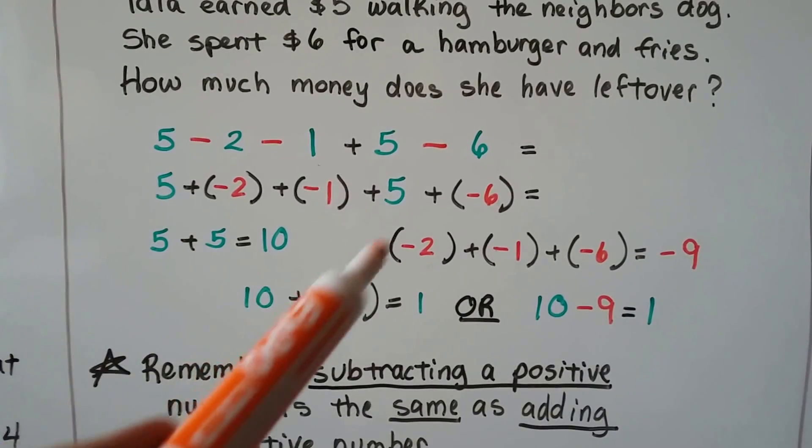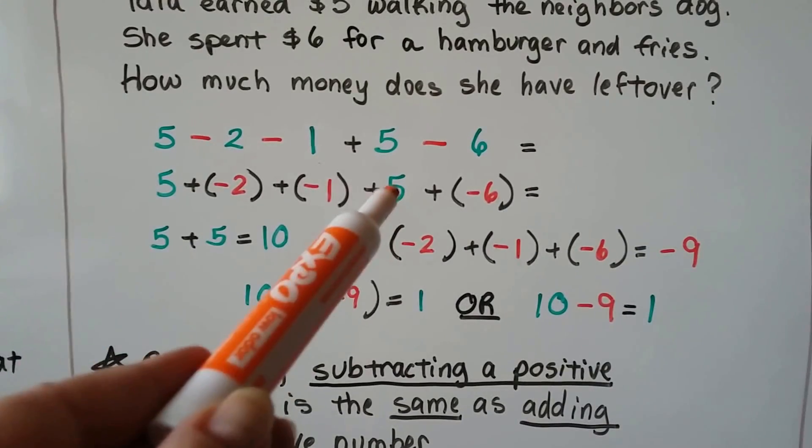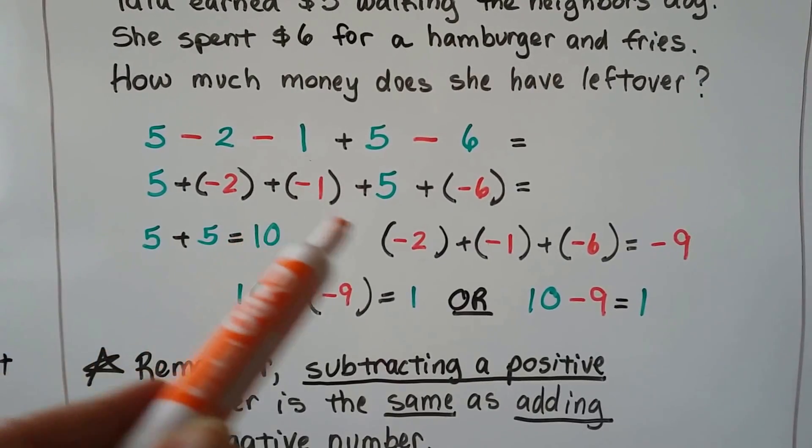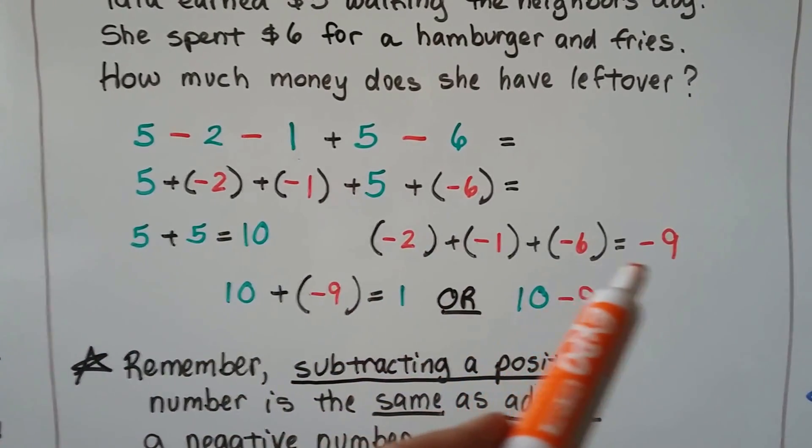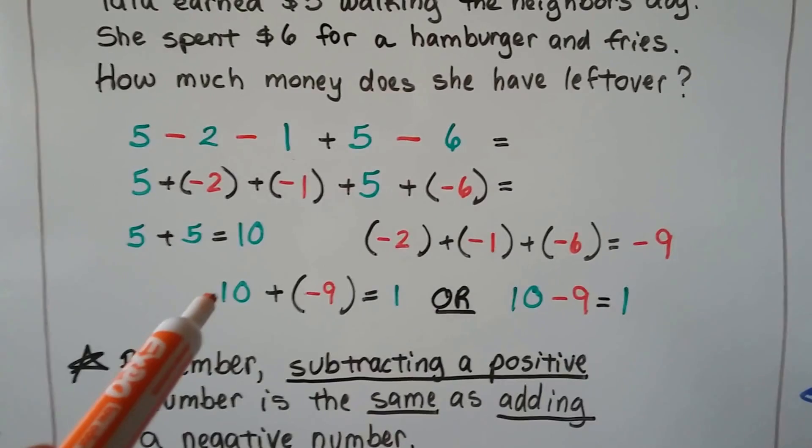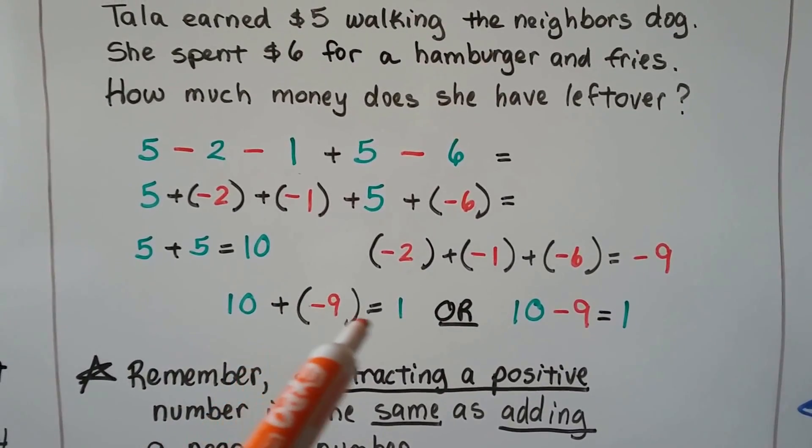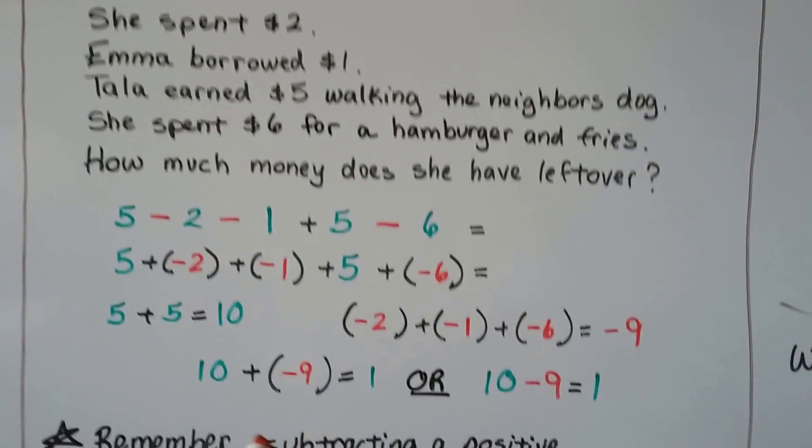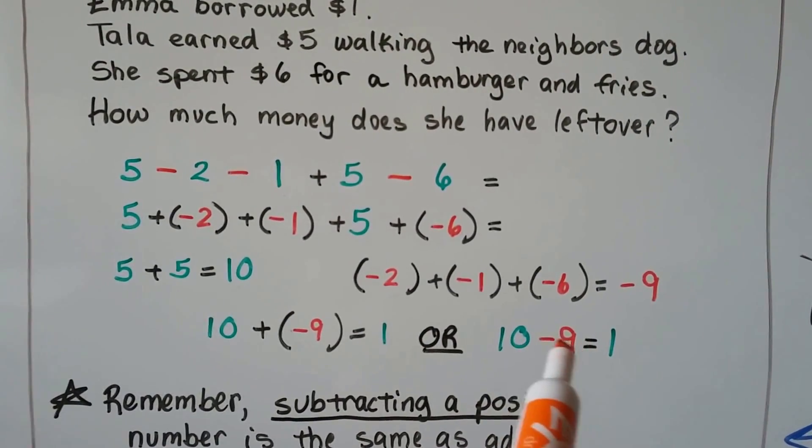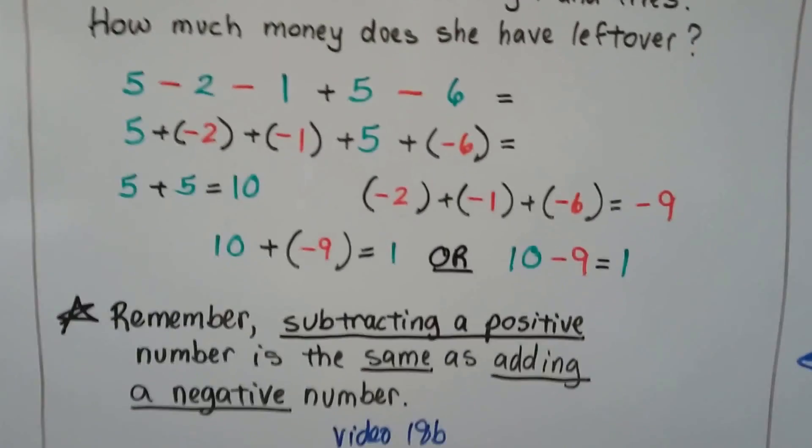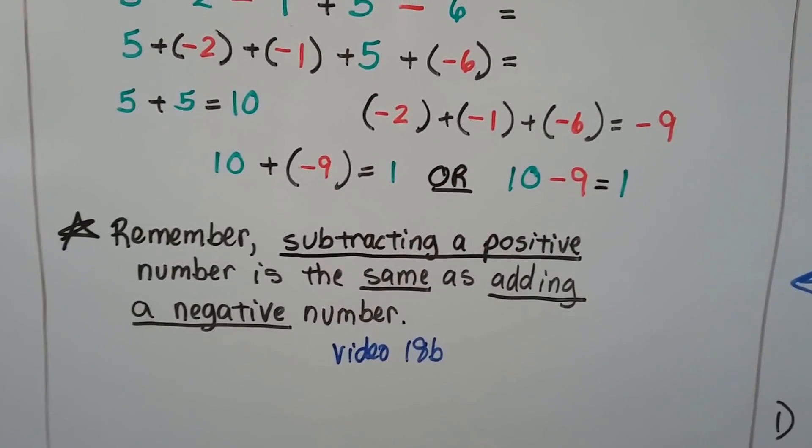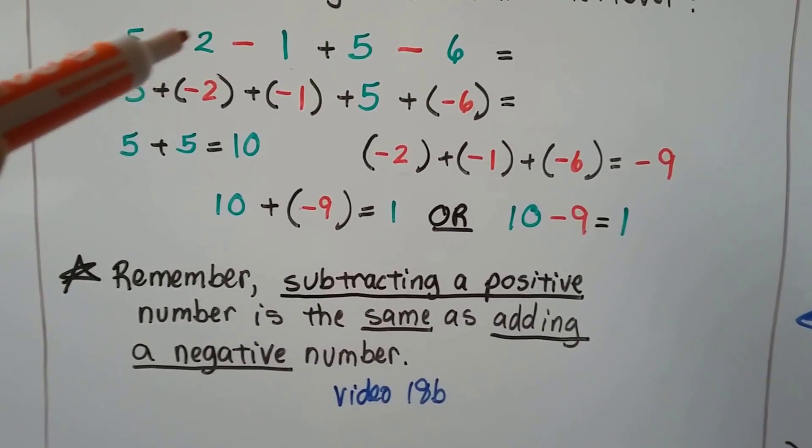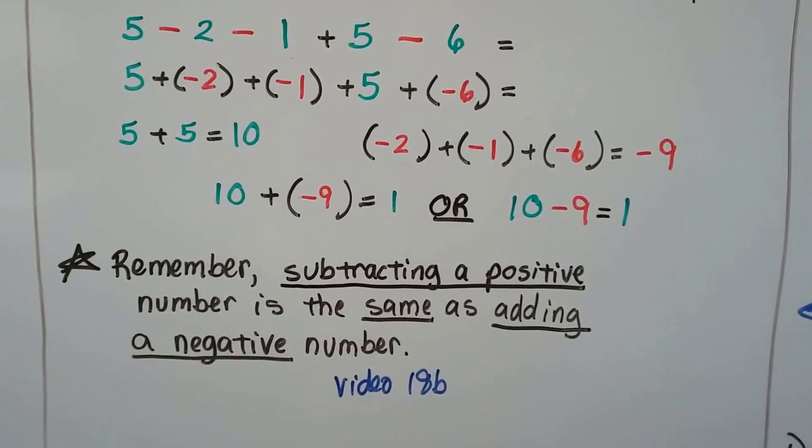We can take the two positive ones, this $5 and that $5 and make a $10. We can take the negative $2 plus the negative $1 plus the negative $6 and add them together to get a negative $9. We have $10 plus a negative $9. Well that equals $1 and that's where we ended up on the number line. And we can also say it's just $10 minus $9 which equals $1. So remember, subtracting a positive number is the same thing as adding a negative number. Subtracting a positive is the same thing as adding a negative.